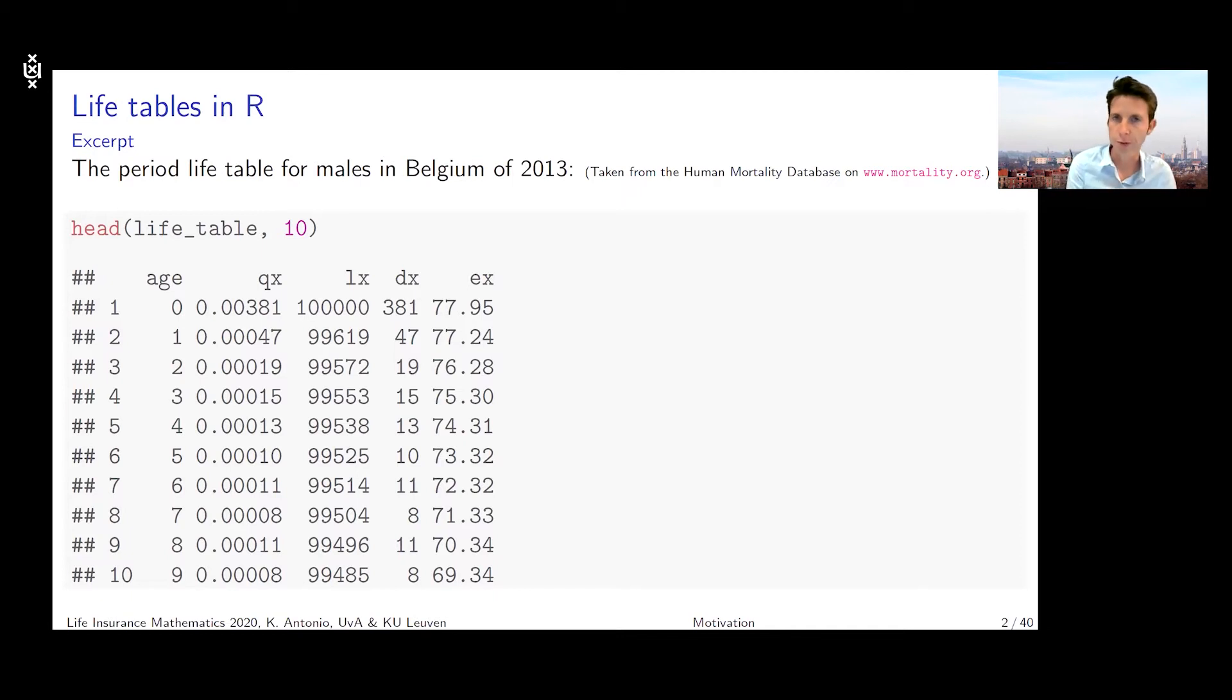What kind of entries do you see? We look at one year of data with ages going from zero up to nine in this example, because I'm only printing the first ten lines. We've got qx, which is the mortality rate, and ex, which is the complete life expectancy in the final column.